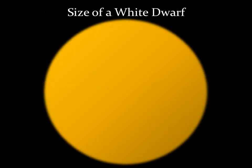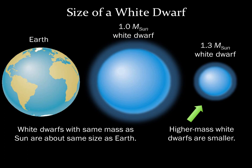A typical white dwarf has the mass of the Sun compressed into a volume the size of Earth. Imagine compressing all of the Sun's mass into the volume of Earth — it sounds impossible, but that's a white dwarf. More massive white dwarfs are actually smaller in size than less massive ones. For example, a 1.3 solar mass white dwarf is half the diameter of a 1 solar mass white dwarf. The more massive white dwarf is smaller because its greater gravity can compress it to a much greater density.